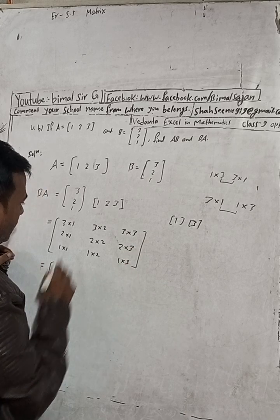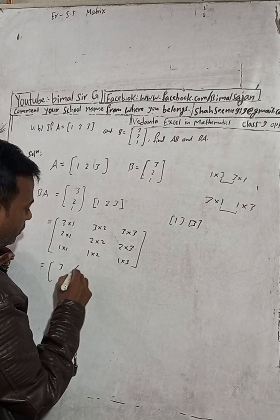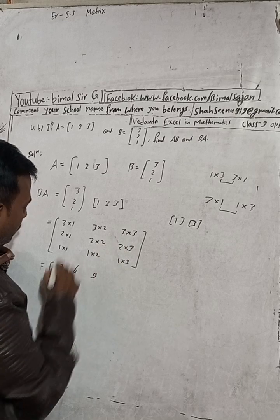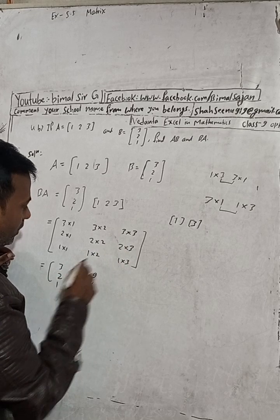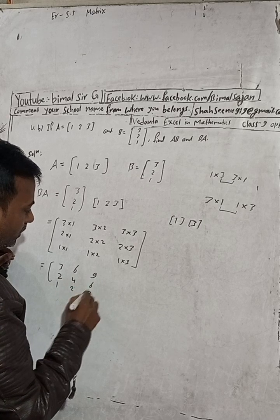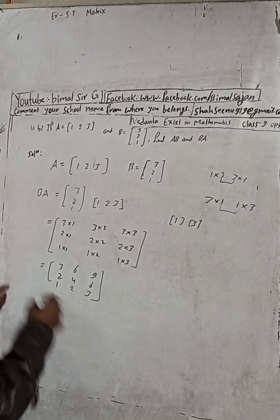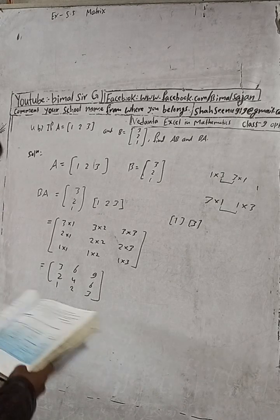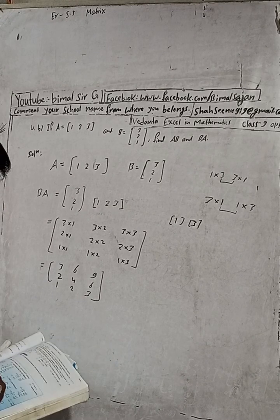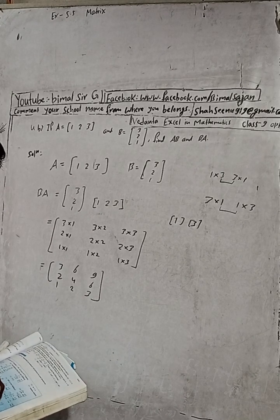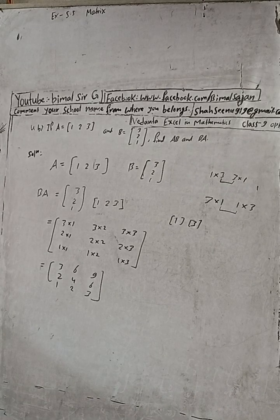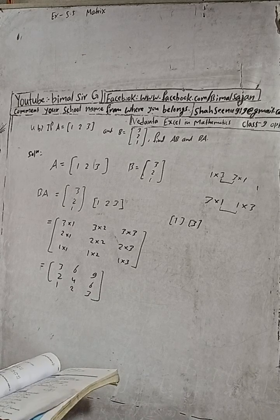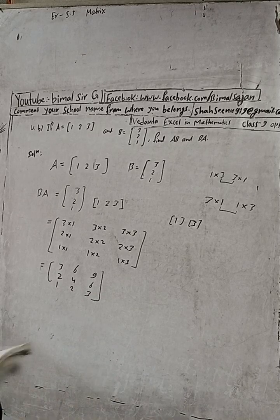So our answer is: three ones are 3, three twos are 6, three threes are 9; two ones are 2, two twos are 4, two threes are 6; one one is 1, one two is 2, one three is 3. So B·A is the 3×3 matrix [[3,6,9],[2,4,6],[1,2,3]]. That was question number 4, parts a and b.